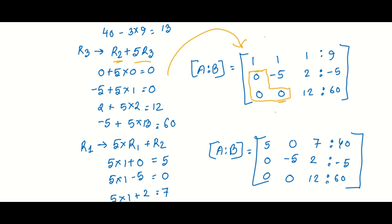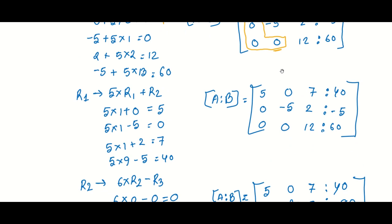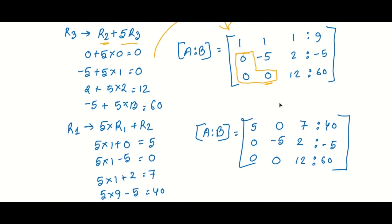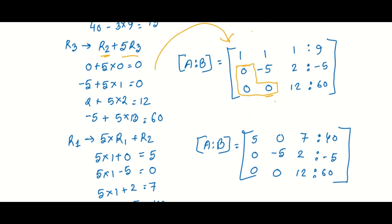This is the Gauss-Jordan method. What do we do? We also create a lower triangular matrix, converting it to a diagonal matrix. We change positions to get zeros above the diagonal as well. Let's start.